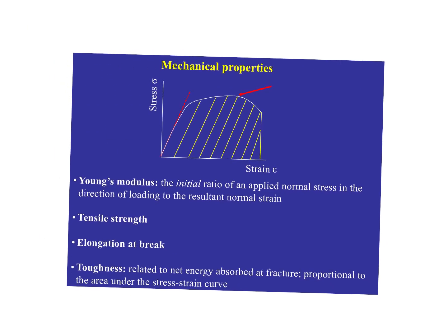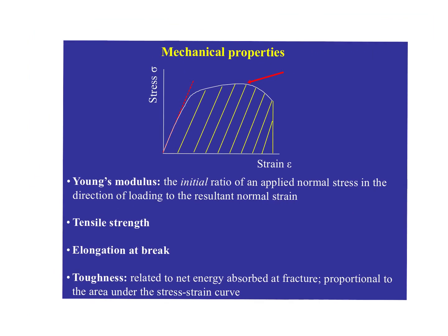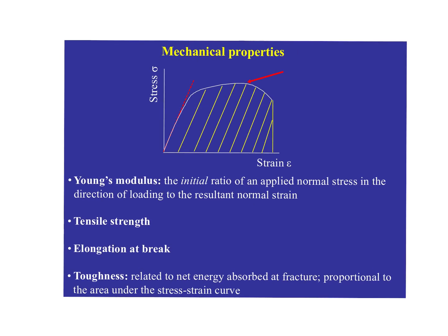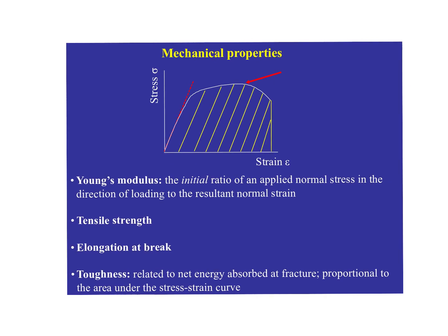Today we're going to do a little bit of a review of mechanical properties, filling together a few concepts that are definitely useful. We're going to talk about things you've seen before, but maybe not in the context of polymers. This image shows the usual stress-strain curve for materials. The area under the curve is the toughness by textbook definition, but no one ever quantifies toughness that way. We use K1C measurements involving little bars with notches.